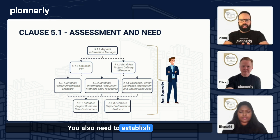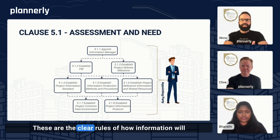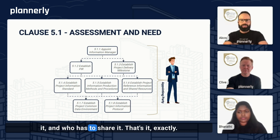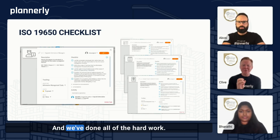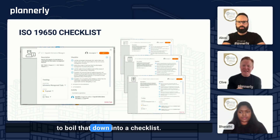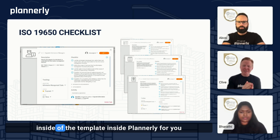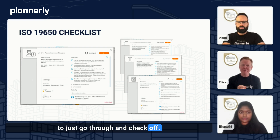You also need to establish your project information protocols — the clear rules for how information will flow across the project, who creates it, who validates it, and who has to share it. We've done all the hard work to boil that down into a checklist. All of those steps are available inside the template in Plannerly for you to just go through and check off.